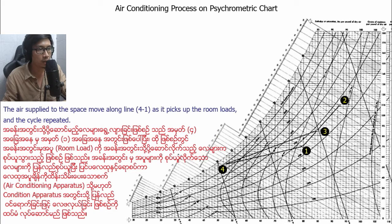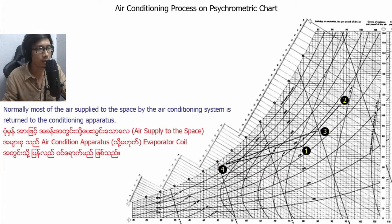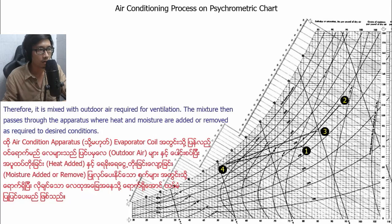The air supplied to the space moves along line four to one as it picks up the load, and the cycle is repeated. Normally, most of the air supplied to the space by the air conditioning system is returned to the conditioning apparatus. Therefore, it is mixed with outdoor air required for ventilation. The mixture then passes through the apparatus where heat and moisture are added or removed as required to achieve the desired condition.